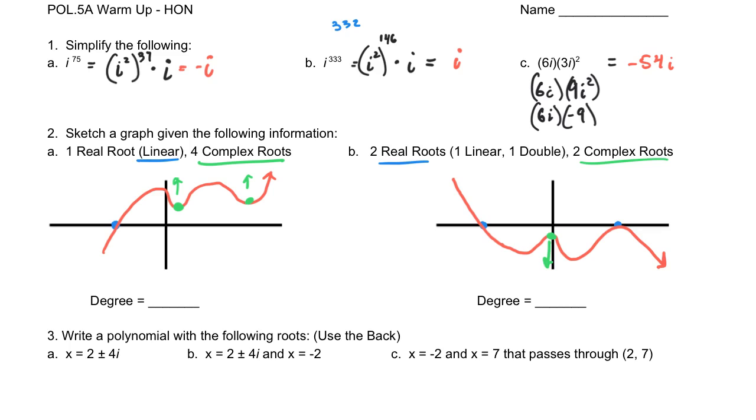So, as we count up the degree, there's 1, 2, 3, 4, 5, so 1 at the linear, and then 2 for each of the complex pieces,